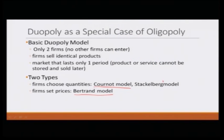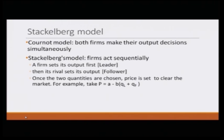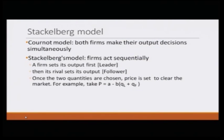There is another model we are interested in, and that is the Stackelberg model. In the Stackelberg model, firms also choose quantity to compete. The difference from Cournot is that in Cournot, both firms make their output decisions simultaneously. But in Stackelberg, firms act sequentially. There is a firm we call the leader — it sets its output first. Then the other firm, called the follower, observes the output decided by the leader and then sets its own quantity.